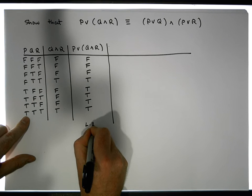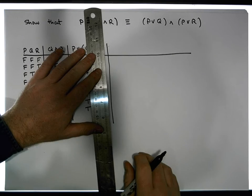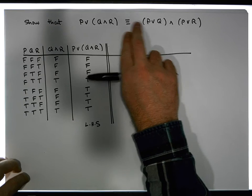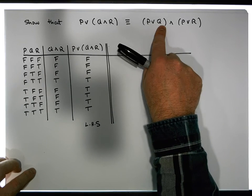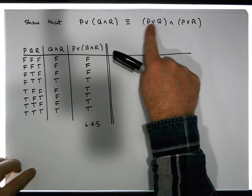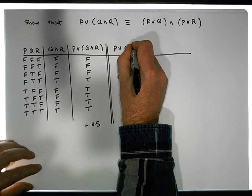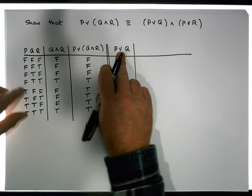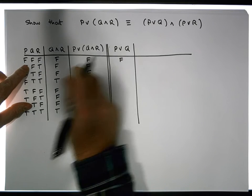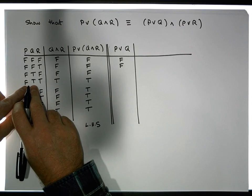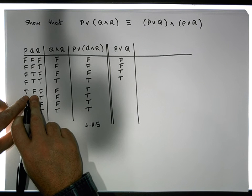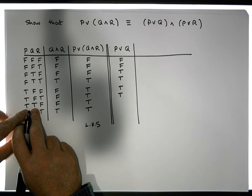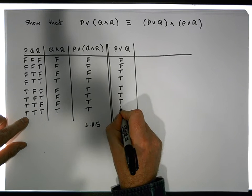Now the right-hand side. I'll put a double bar to demarcate. First we evaluate the left operand, P OR Q, by ORing the P and Q columns. OR gives false only when both are simultaneously false. P and Q are false-false at row one, giving false; row two is false-false giving false. Rows three onward are not simultaneously false, so we get true values for the rest of the P OR Q column.